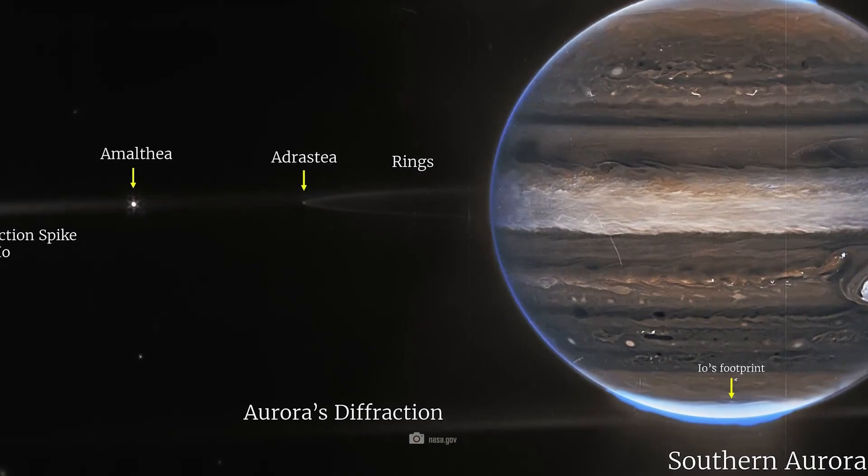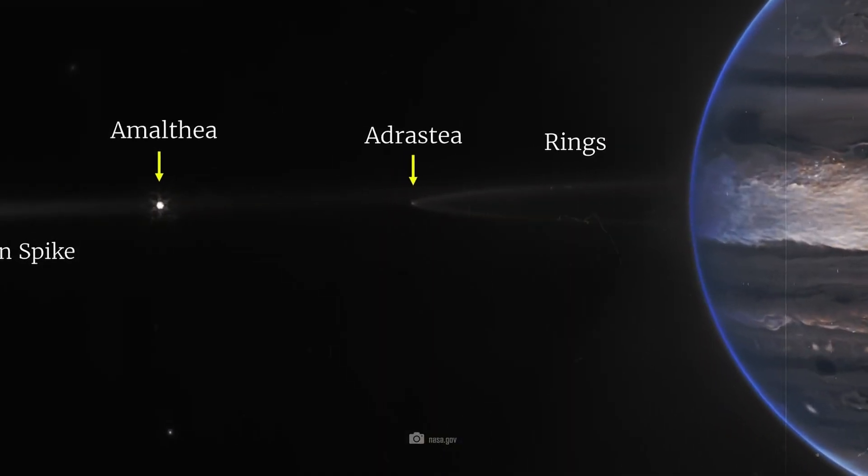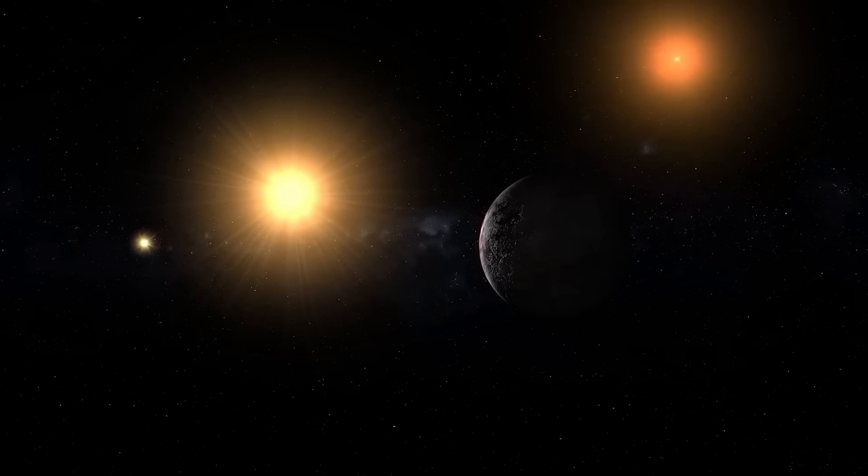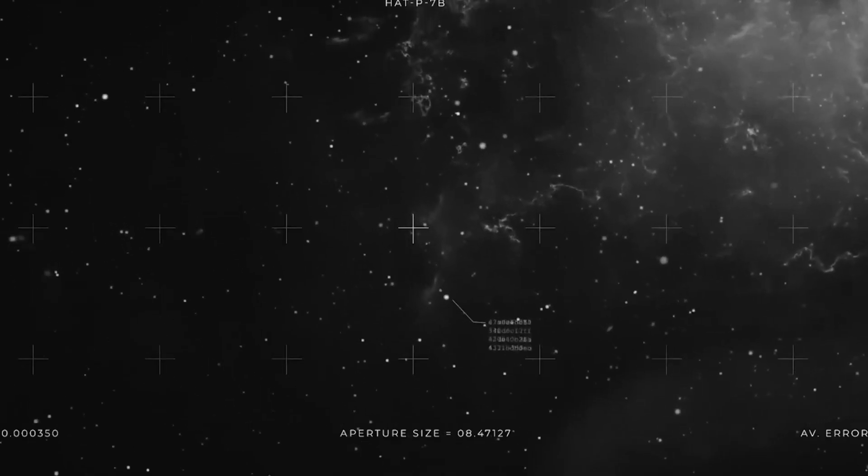The web images show not only well-known structures such as the aurora borealis or the great red spot, but also the delicate ring system, which can usually only be glimpsed, and the tiny moons Amalthea and Adrastea.